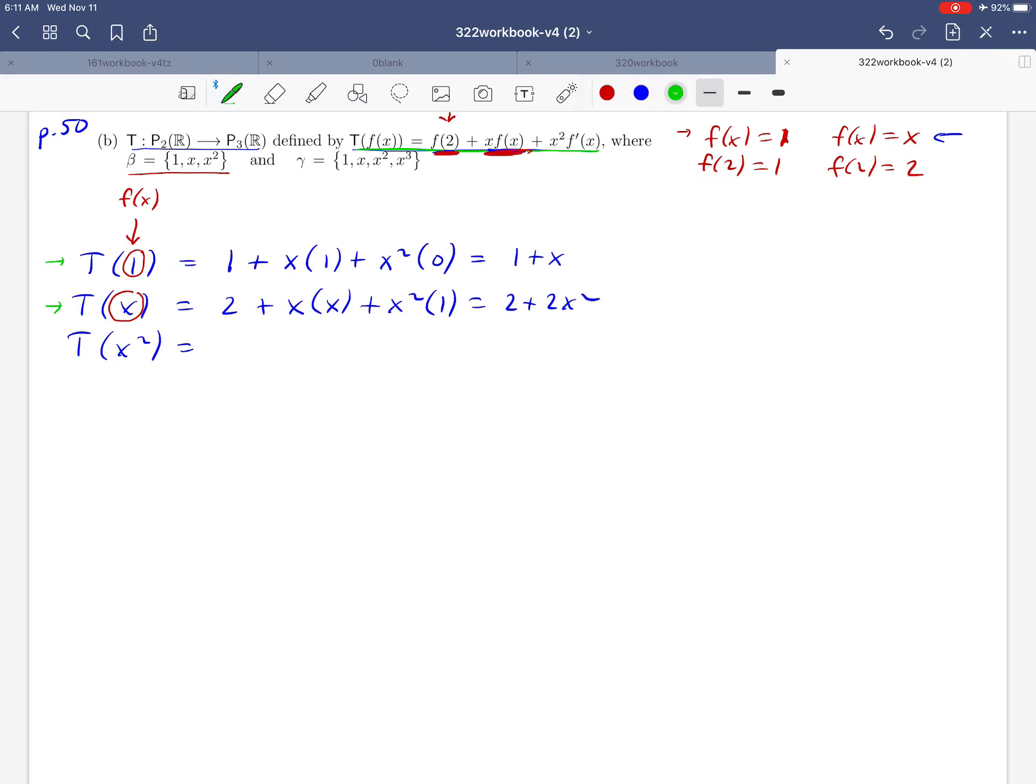And then finally, we're ready for T of x squared. So this time, our f of x looks like x squared. Maybe clear a little clutter away here. So we want to take x squared and substitute it into this formula. So the first thing we need to do is calculate f of 2. And if f of x is x squared, that means that f of 2 is 2 squared, which is 4. So that's going to be our first thing here.